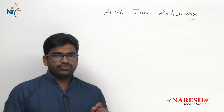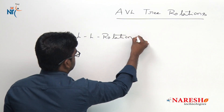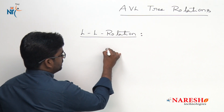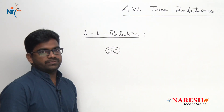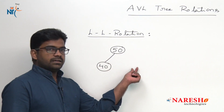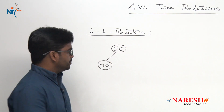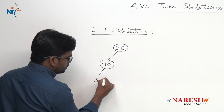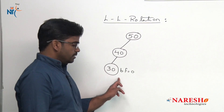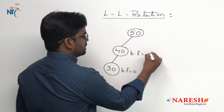The first AVL tree rotation is LL rotation. When do we use this LL rotation? For example, I am inserting the value 50 — now it is balanced, balance factor is 0. Whenever we insert 40, it is also balanced: right side height is 0, left height is 1, so 0 minus 1 is minus 1 — balance factor is minus 1.